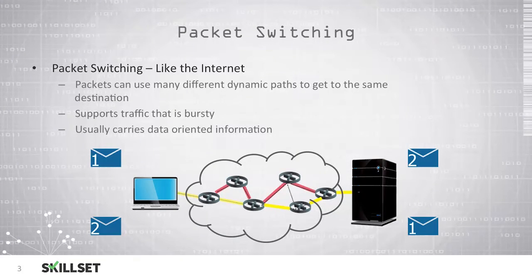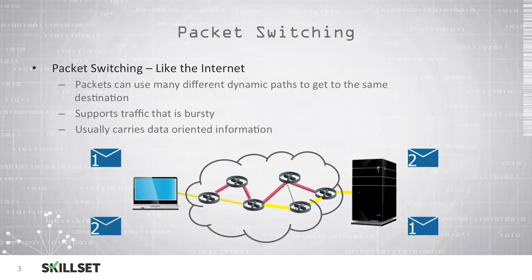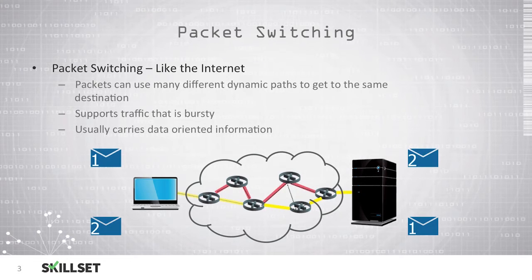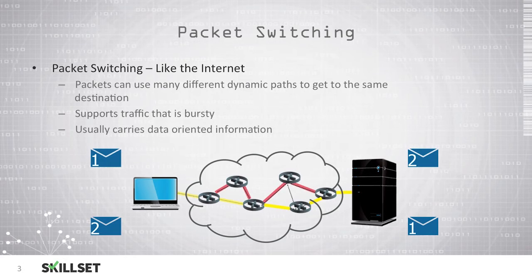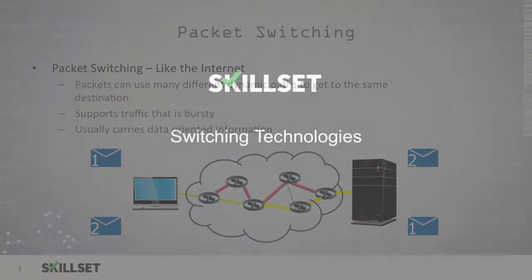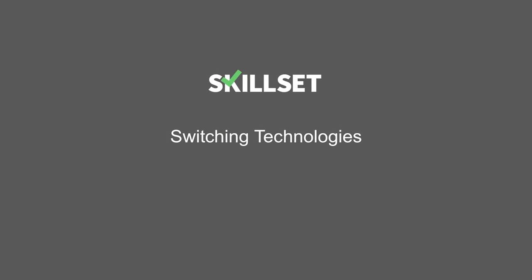Packet switching supports traffic that is bursty, where traffic is generally at a certain level but then can increase rapidly for short periods of time. Packet switching is used to carry data-oriented information, whereas circuit switching is more commonly used for voice traffic. This concludes our switching technologies module.